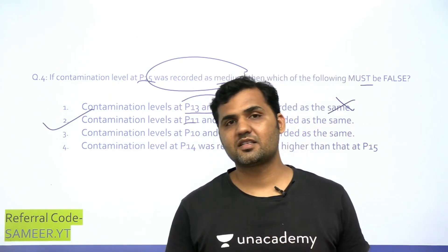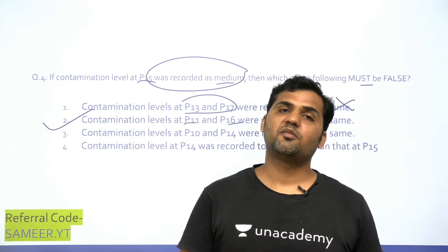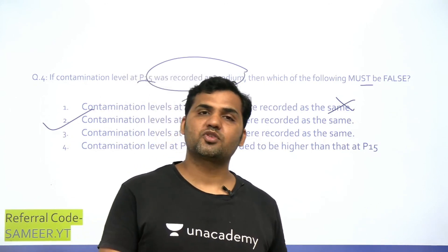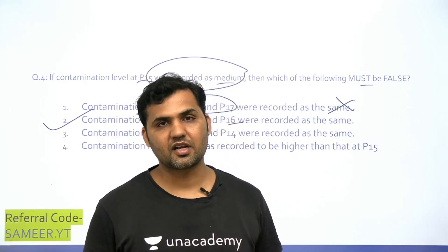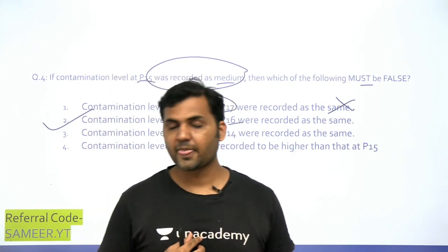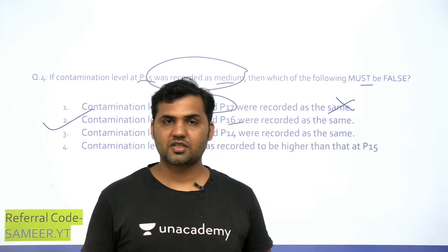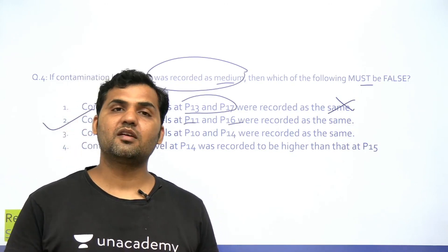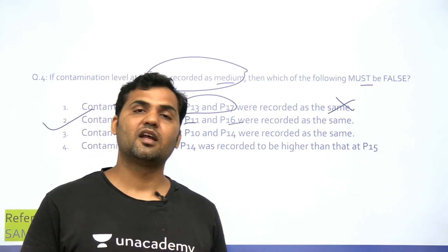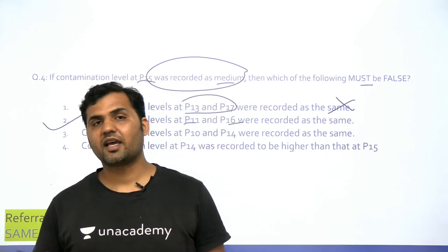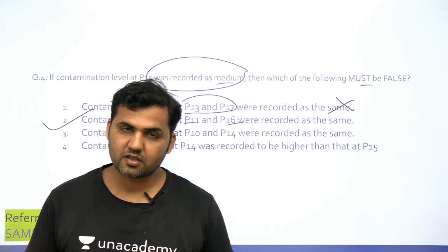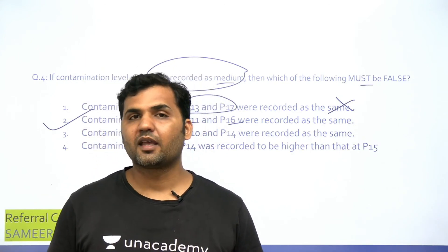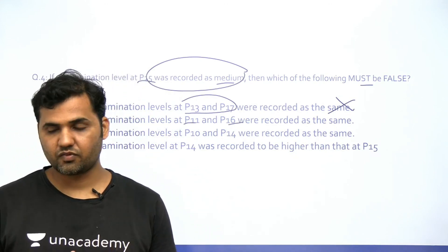The key takeaway is that you do not need to build all cases before answering questions. There could be five or more possible cases for this arrangement; making all of them in exam conditions would take 20–25 minutes. By reading the questions first and using conditional information smartly, you can solve the set in 10–12 minutes. Please subscribe to the channel, share with friends, and stay tuned — an LRDI practice set will be uploaded daily until CAT.